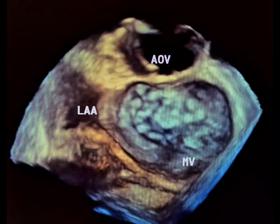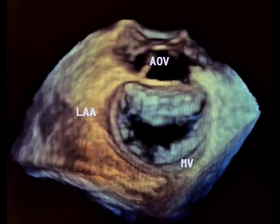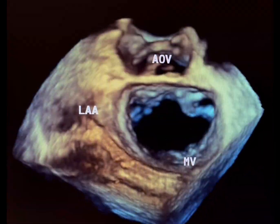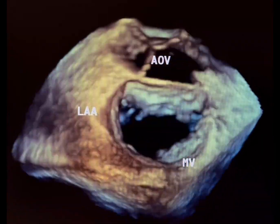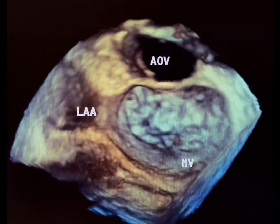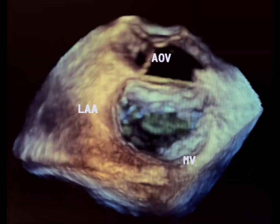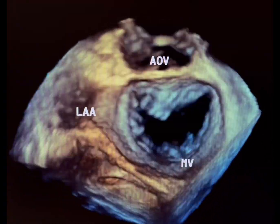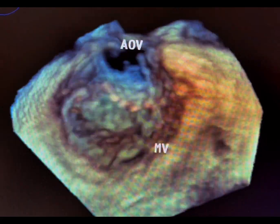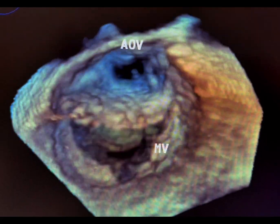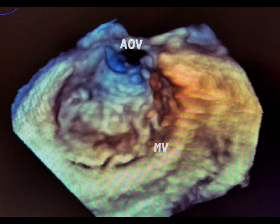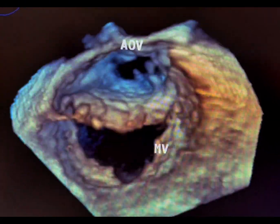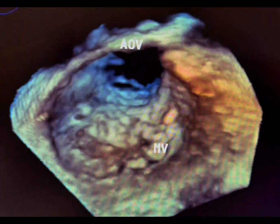In this 3D echocardiogram, we can see the mitral valve leaflets from the left atrial side, normal in appearance. And here we have a view from the left ventricular side, showing normal mitral valve leaflets.